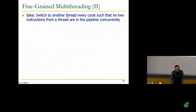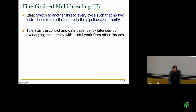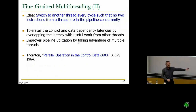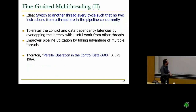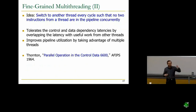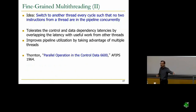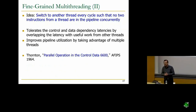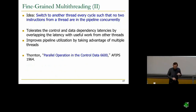To restate: switch to another thread every cycle such that no two instructions from a thread are in the pipeline concurrently. This improves pipeline utilization by taking advantage of multiple threads. This was actually a very old idea, first employed in the CDC 6600 — the first out-of-order execution processor — to overlap the latency of memory operations. You could start a memory access from one thread every cycle, so you needed 10 threads to tolerate the memory latency. GPUs also use this to tolerate memory latency.